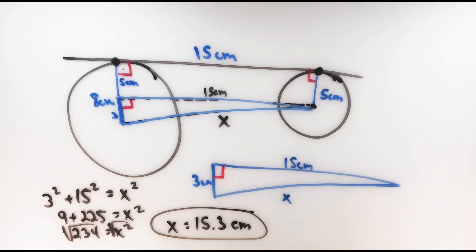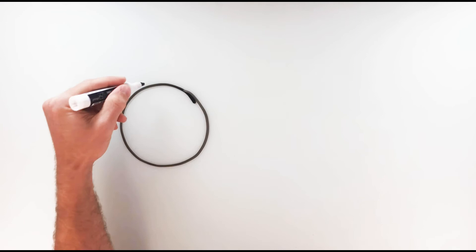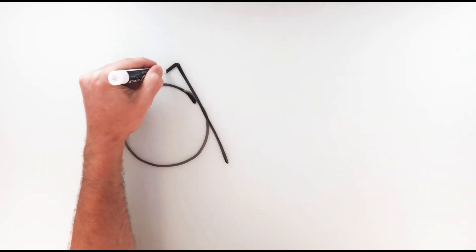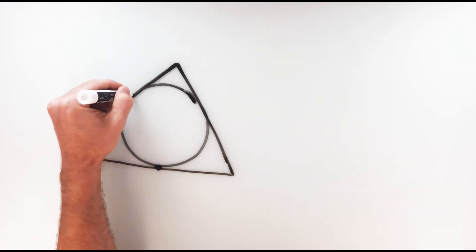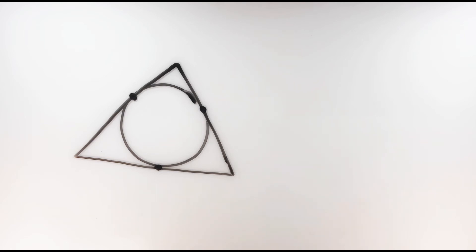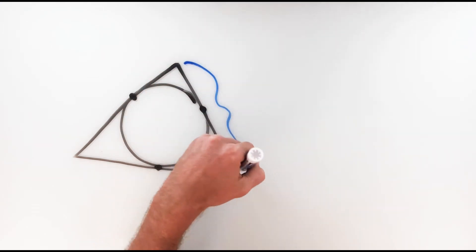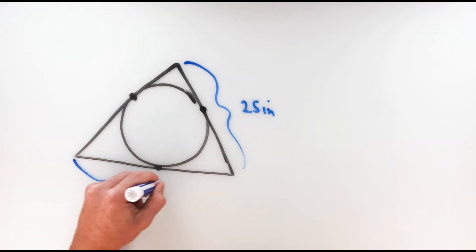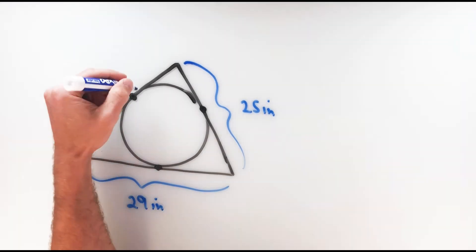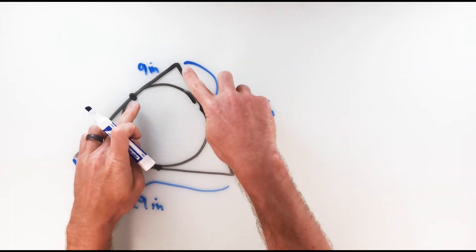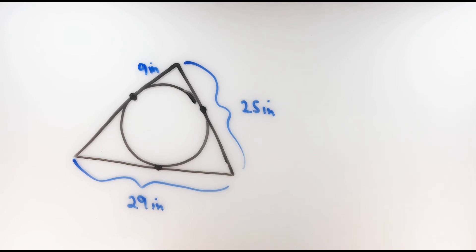Those right triangles allow us to use strategies from right triangle geometry — in this case, the Pythagorean theorem. For one more example, we have a circle with a triangle circumscribed around it, where each side of the triangle is tangent to the circle. The given measurements are: 25 inches along the bottom, 29 inches on the right side, and 9 inches for a partial segment at the top-left corner. We want to find the perimeter of the triangle.